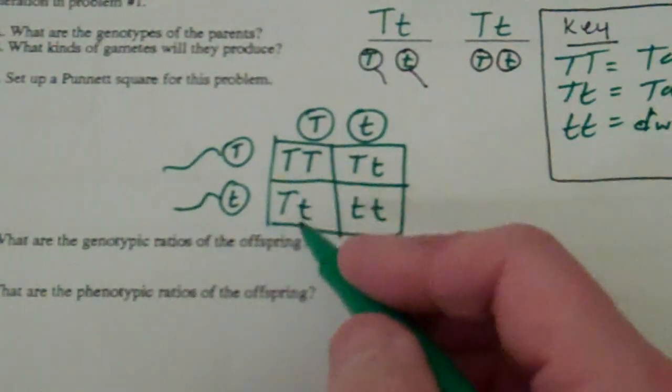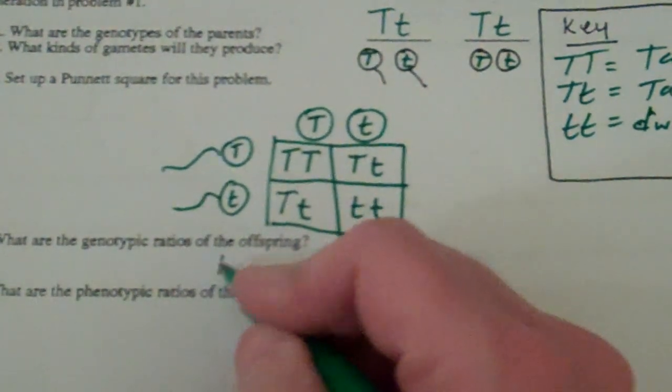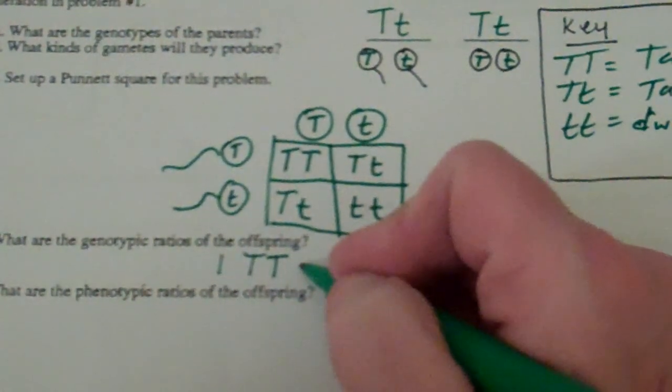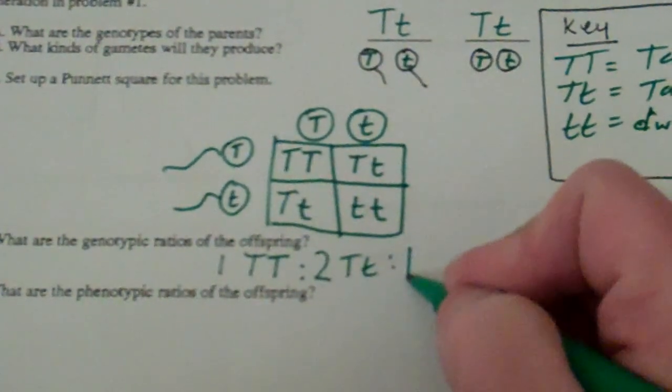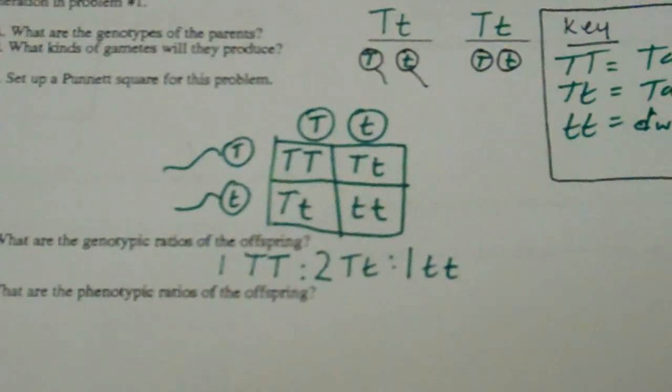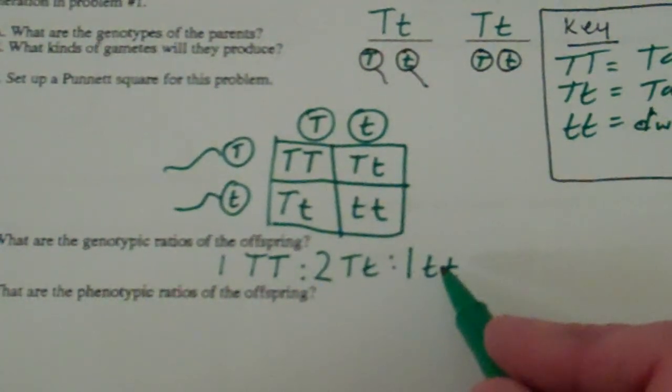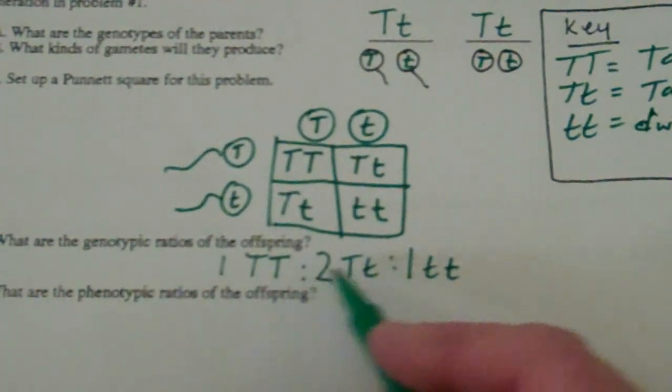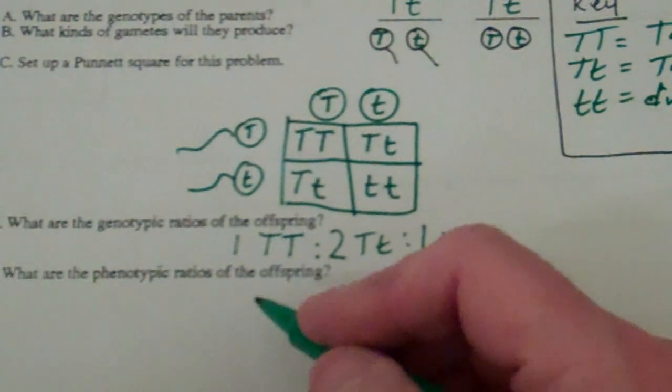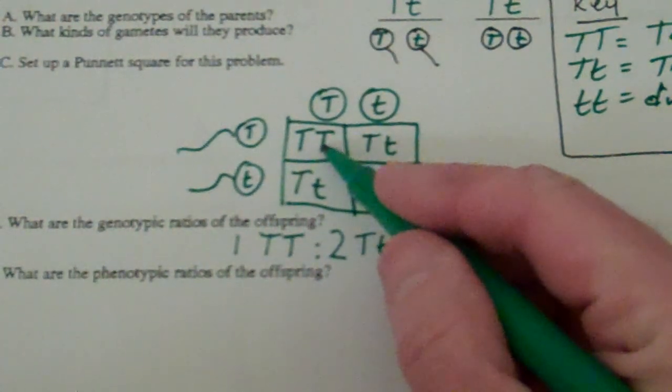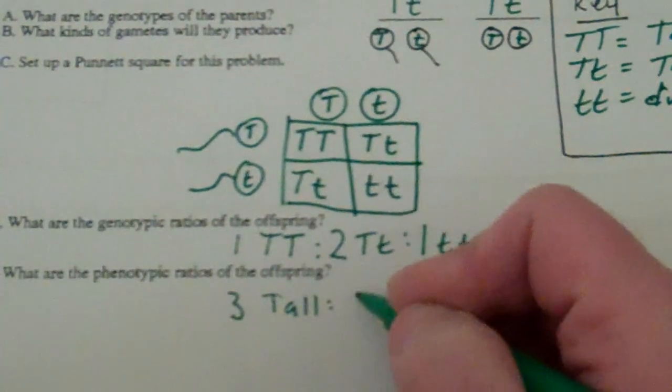So my genotypic ratio, I'm going to do this one in numbers this time. You can do percents, but this time I'm going to do numbers. Sometimes it's just nice to switch it up. So I have one of these, one big big, two big little, one little little. Now don't give any more information than that. Don't mix it up. They just want genotypes, so just give genotypes and how many. Phenotypic ratio, you just want to give phenotypic information. So I've got tall, tall, tall, dwarf: three tall to one dwarf.